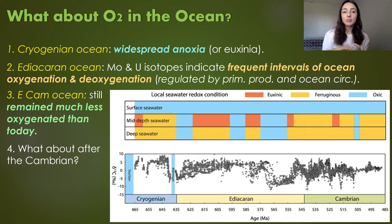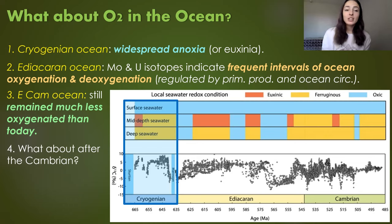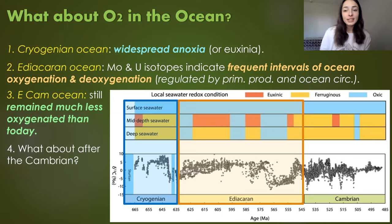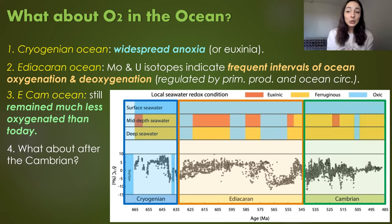We've been talking about atmospheric and ocean oxygen, but haven't distinguished between deep and surface ocean. During the Cryogenian period around 800–635 million years ago, there was widespread anoxia and euxinia mainly in the mid-depth to deep ocean. During the Ediacaran, isotopic evidence from redox-sensitive trace metals like molybdenum and uranium indicates frequent intervals of ocean oxygenation and deoxygenation, likely regulated by primary production and ocean circulation. In the early Cambrian, that decrease in oxygen caused the early Cambrian ocean to remain much less oxygenated than today, especially in the mid-to-deep seawater realm.